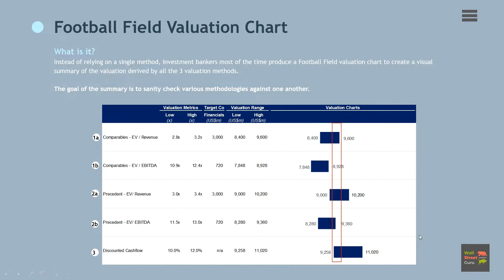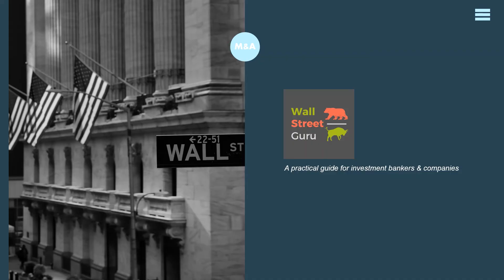You can see from the chart here, each of the valuation methods produces different high and low ranges in EV valuation. A banker will typically draw a red box range which captures the values of the different valuation methods. Again, valuation may not be an exact science. This process aims to minimize margin of errors and disadvantages of using only a standalone valuation approach.